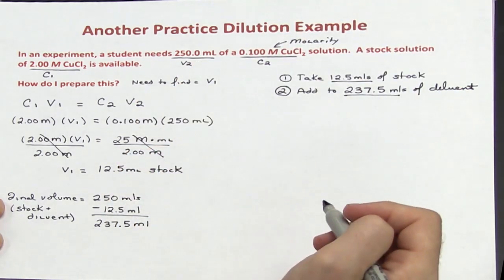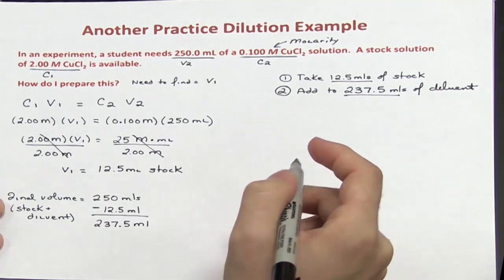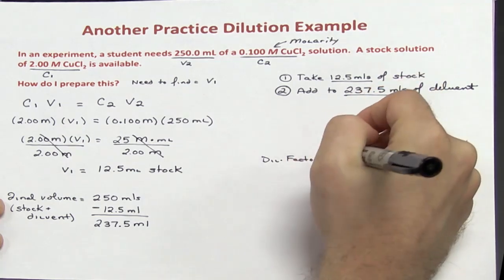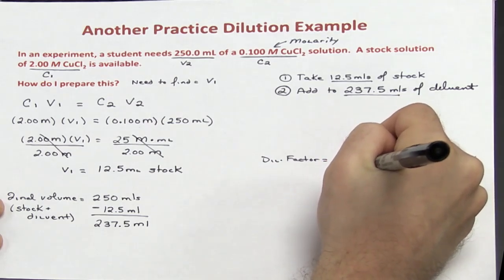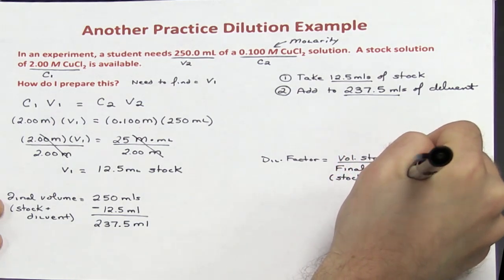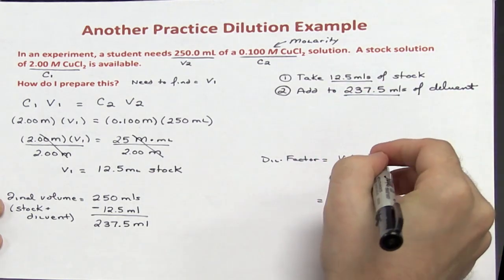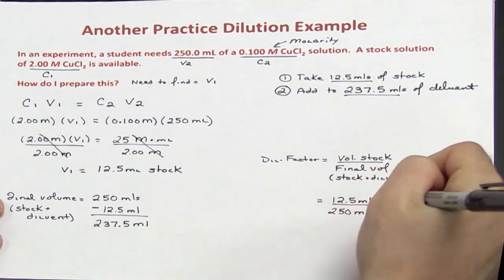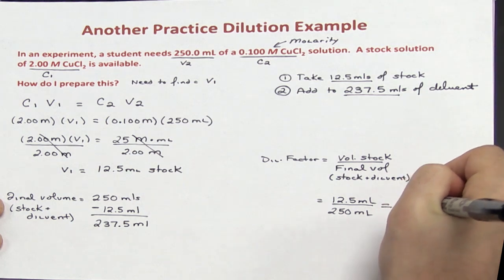You may notice you could have answered this question using a dilution factor. Let's check our work by calculating the dilution factor. The dilution factor equals the volume of stock divided by the final volume, where the final volume is the stock plus the diluent. Here, I took 12.5 mL and the final volume was 250 mL, giving a dilution factor of 0.05.